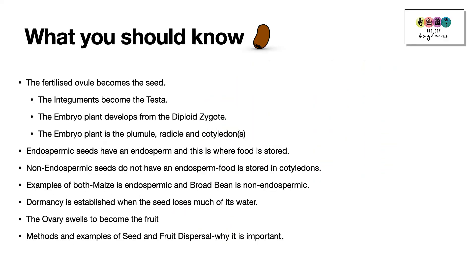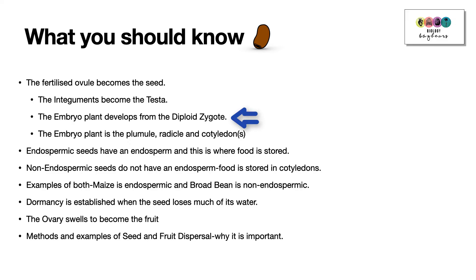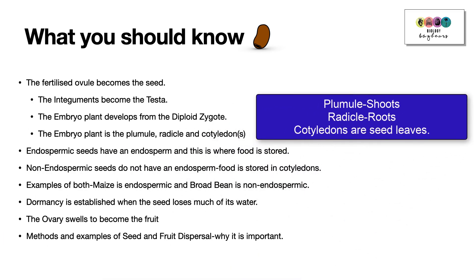Key points to know: the fertilized ovule becomes the seed. The integuments — the walls of the ovule — become the testa, the outer coating of the seed. The embryo plant develops from the diploid zygote and is made up of the plumule, the radicle and the cotyledons. The plumule forms the shoots, the radicle forms the roots, and the cotyledons are embryonic seed leaves.